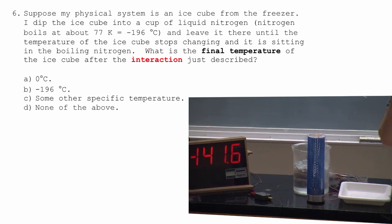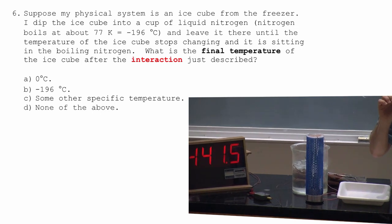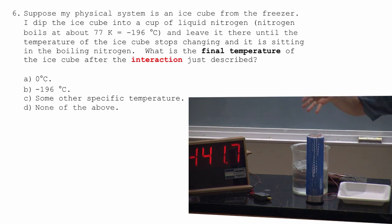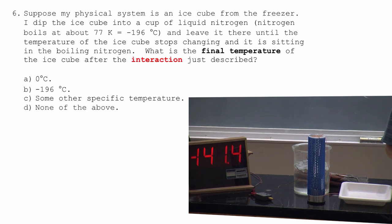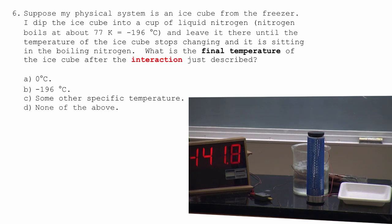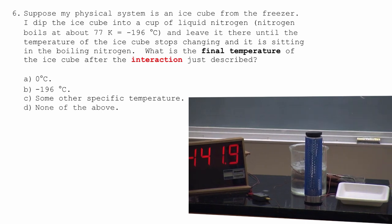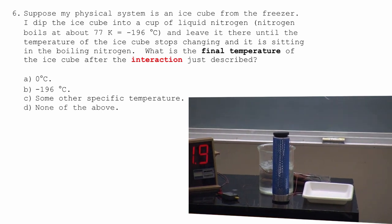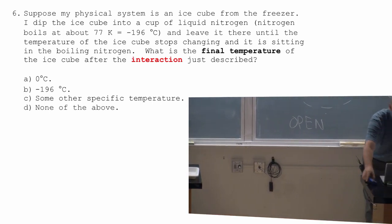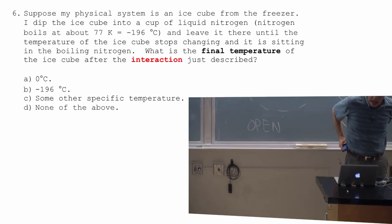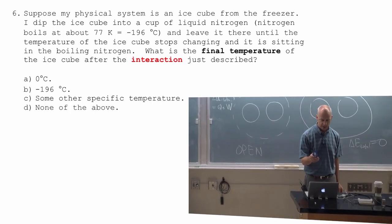And that interaction causes the liquid nitrogen to boil even more. Why is the liquid nitrogen boiling a lot more? What could I say? It's taking energy from the ice. What could I say about the chunk of ice? As far as the liquid nitrogen is concerned, is the chunk of ice hot or cold? It's hot. That chunk of ice sitting here at zero degrees or something is a lot hotter than the liquid nitrogen so heat gets transferred. What's the final temperature of the ice cube after the interaction just described?